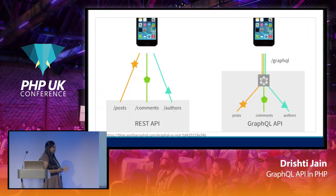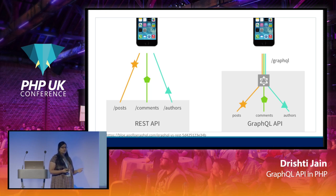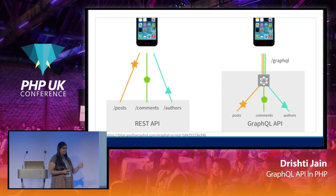A diagrammatic comparison of data fetching through REST APIs versus GraphQL: in REST you go to each endpoint for posts, comments, and authors directly, while in GraphQL you interact with the middle GraphQL layer and then get the data you need.